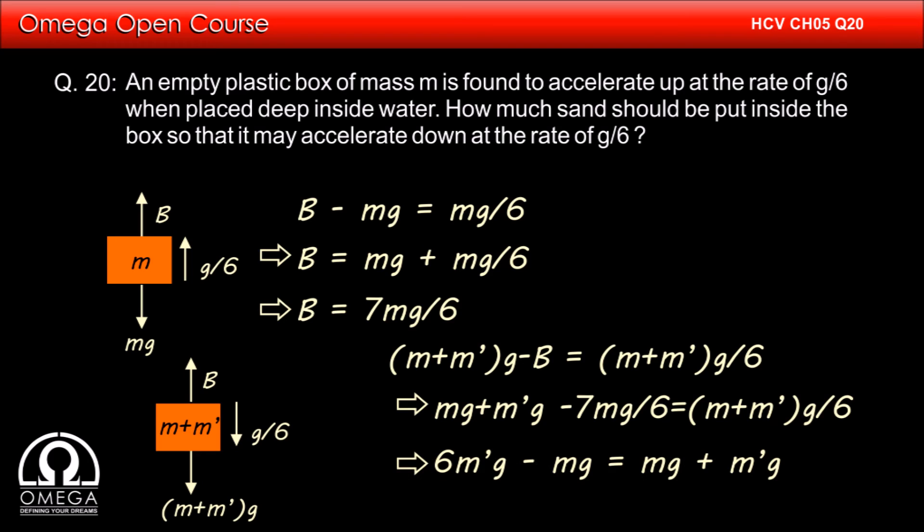Simplifying, we get 6m' g minus mg is equal to mg plus m' g, or m' is equal to 2m by 5. This is our answer.